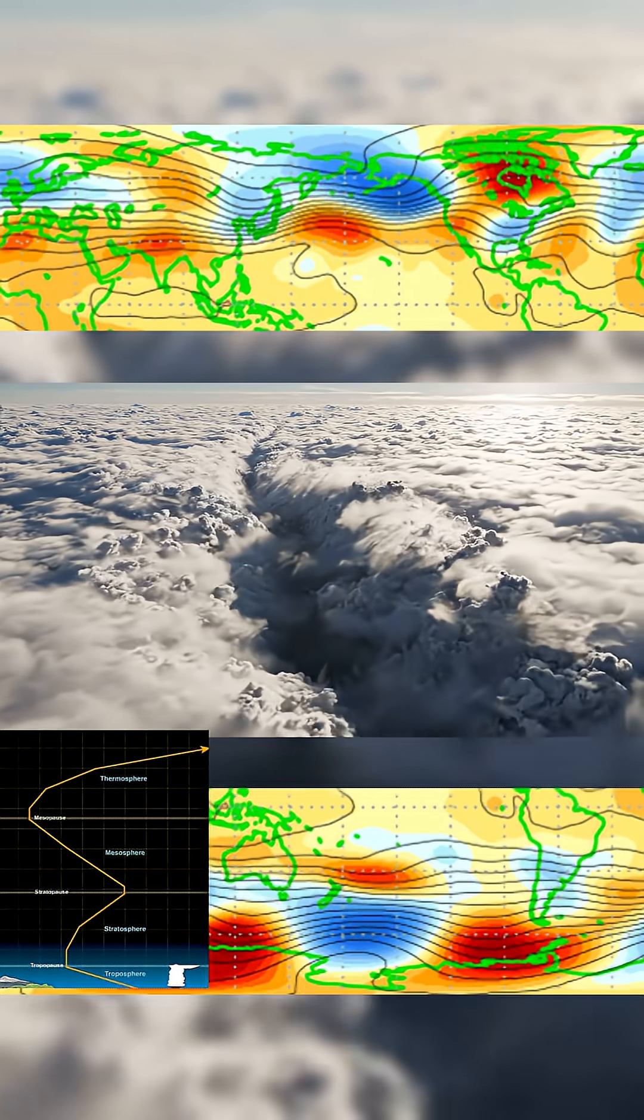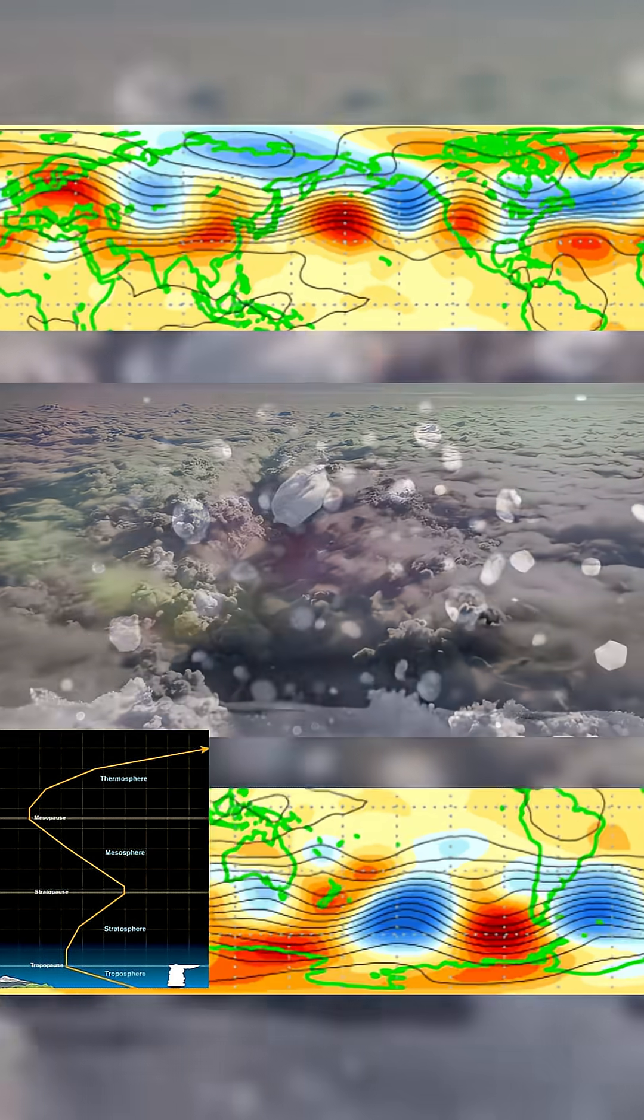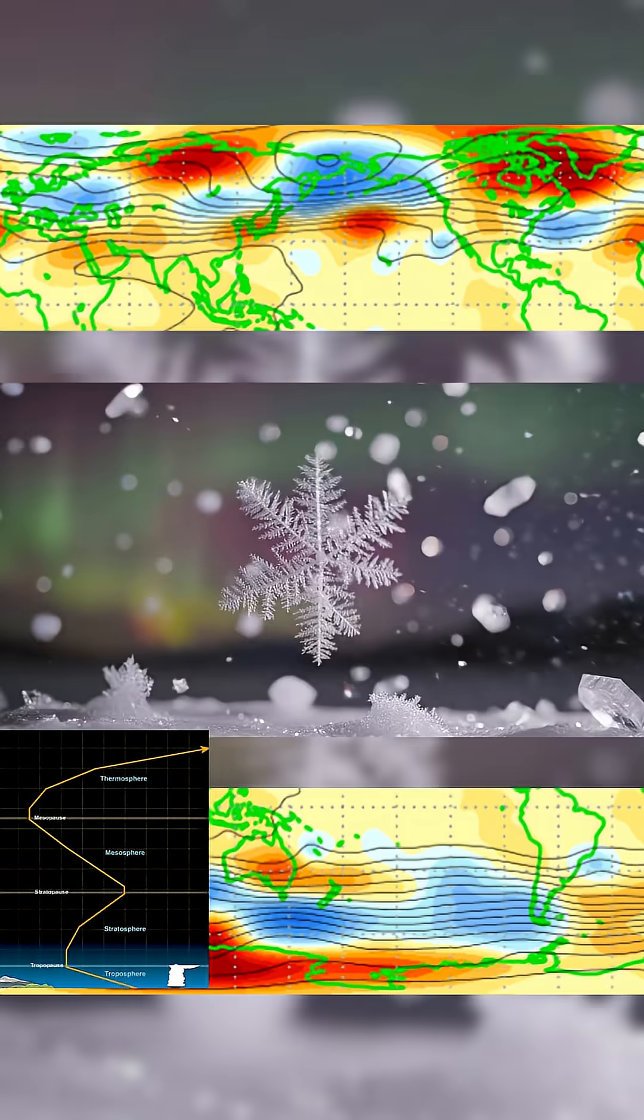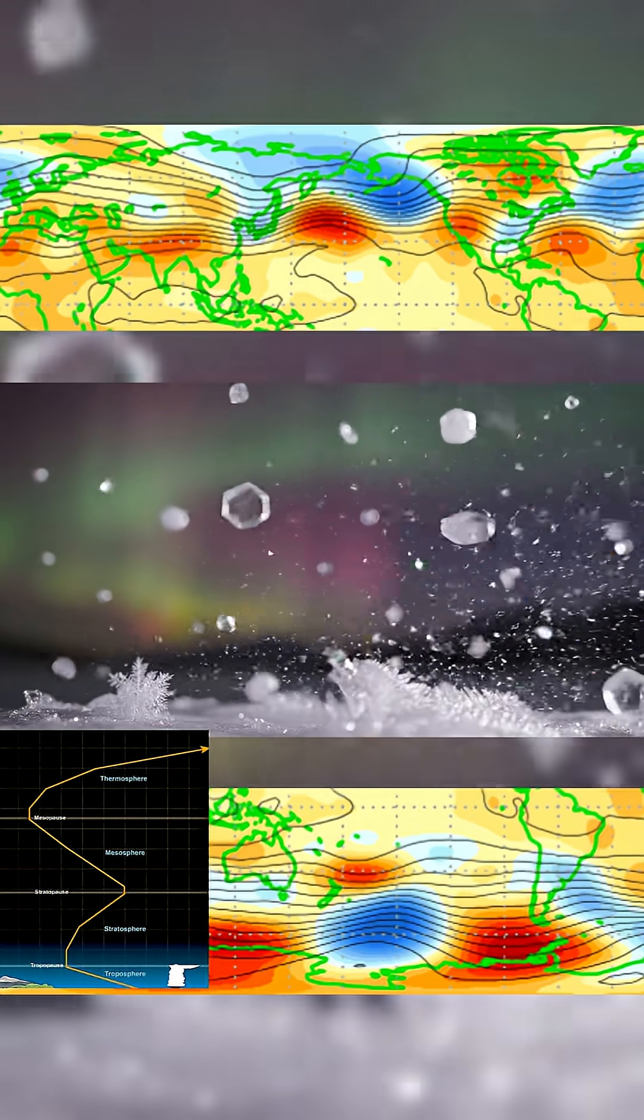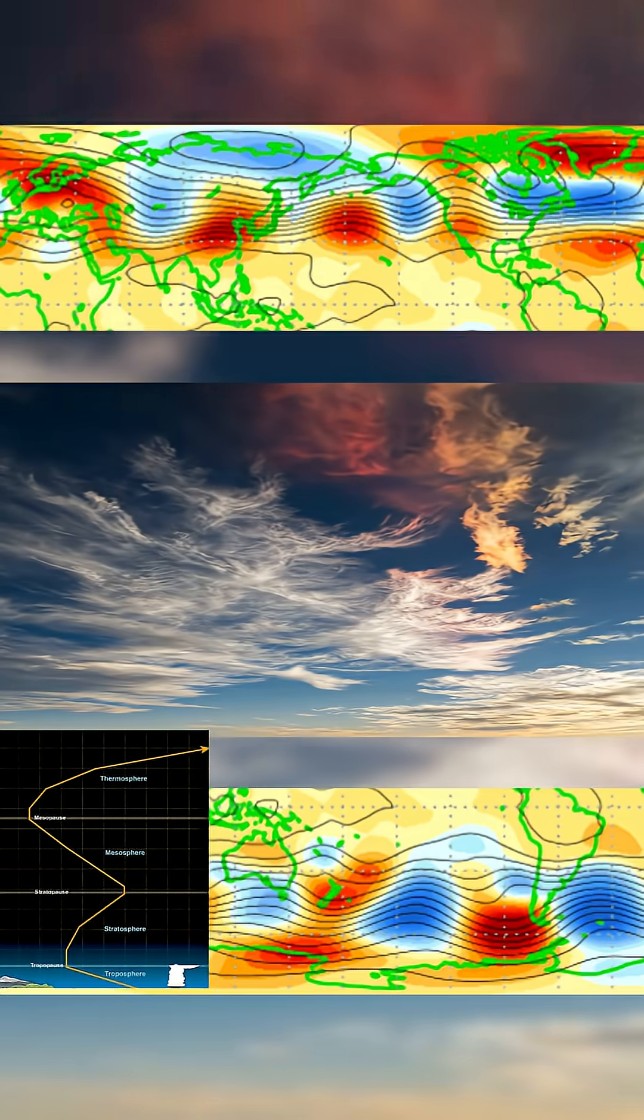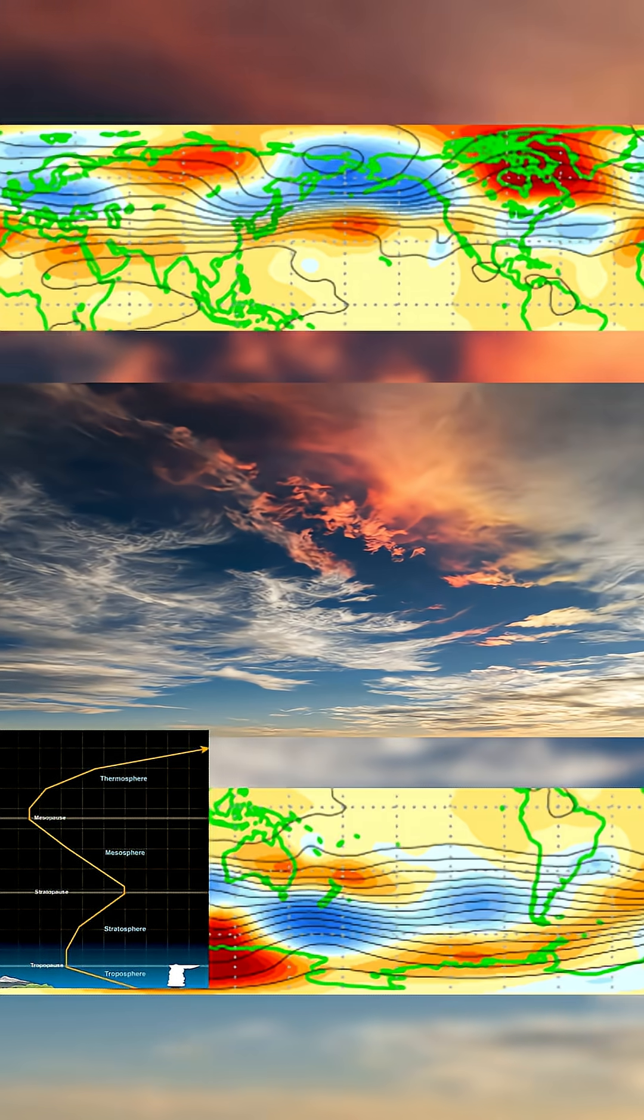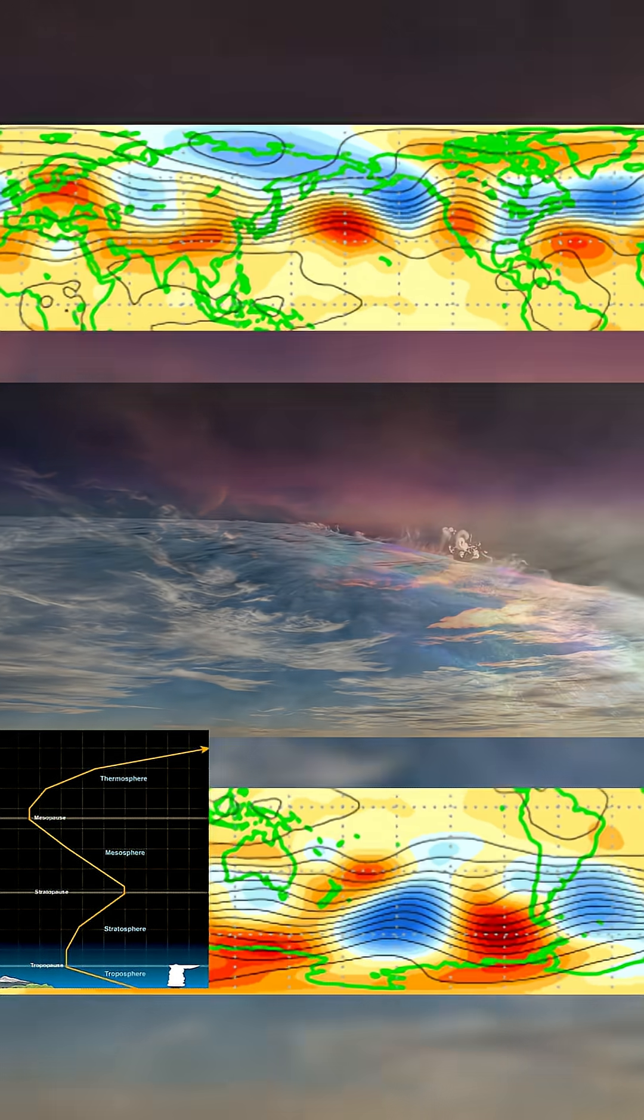That displacement sets off a chain reaction. Pressure falls across the mid-latitudes, storm tracks buckle, and winter patterns lock in early. Wave energy from the North Pacific, fueled by stalled low-pressure systems, is driving heat upward into the stratosphere, distorting the circulation faster than expected.